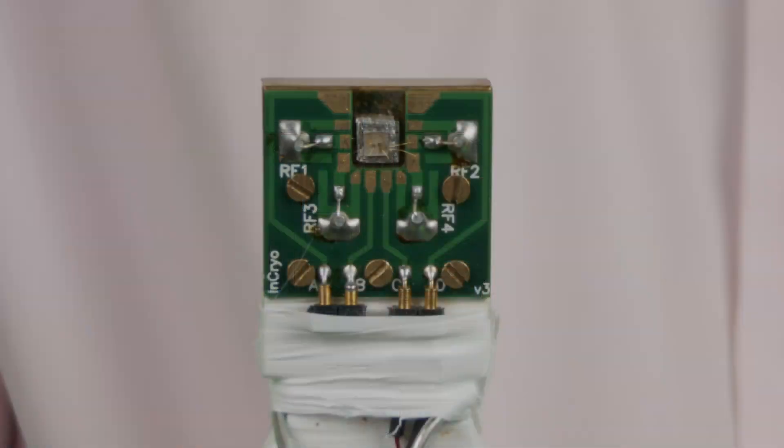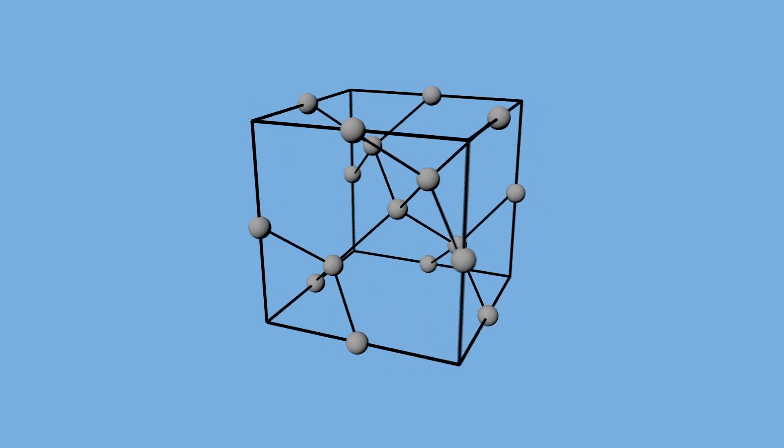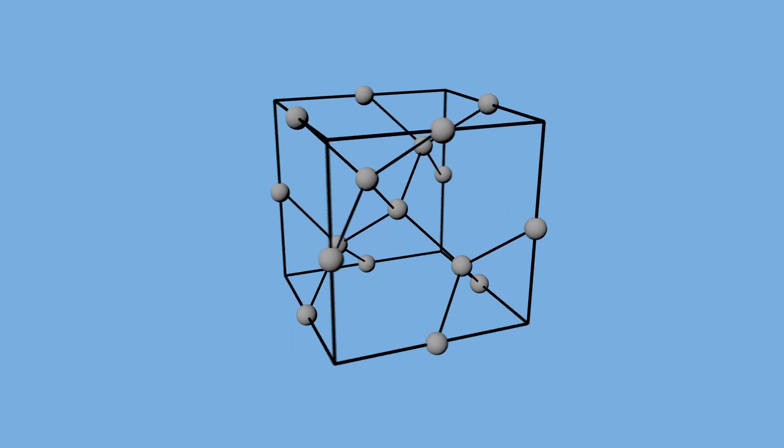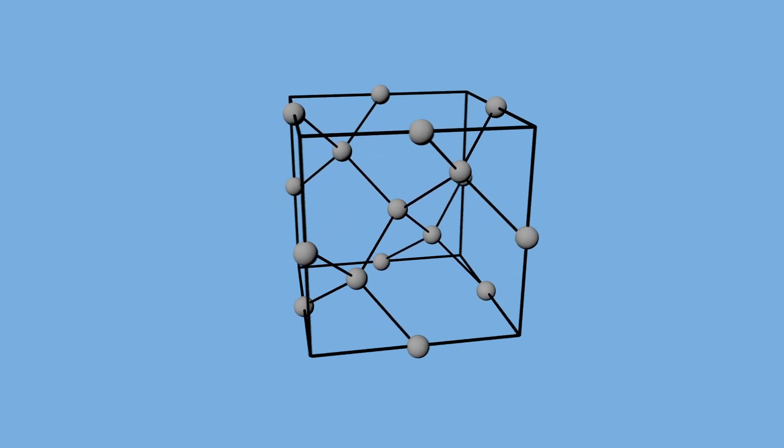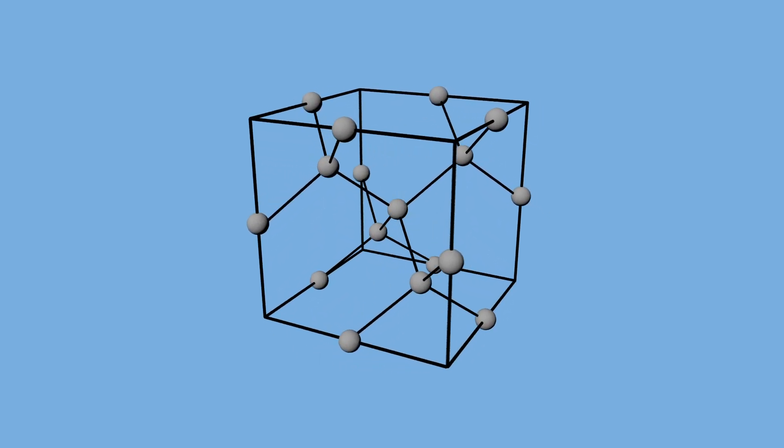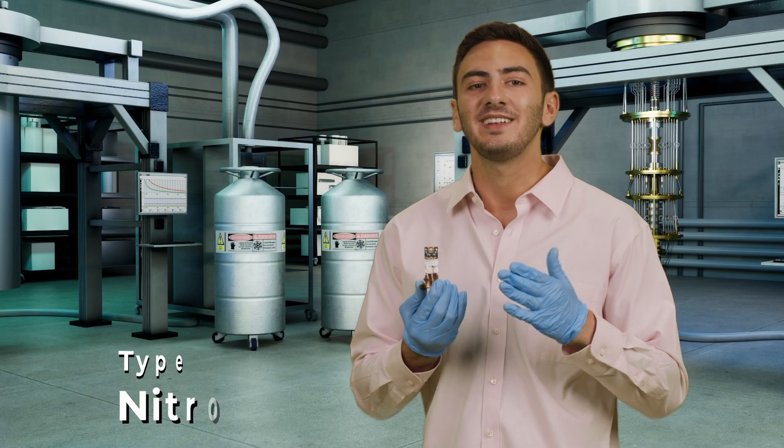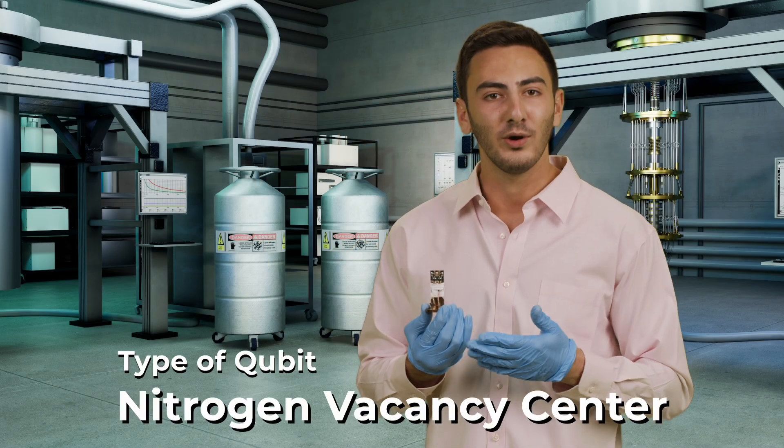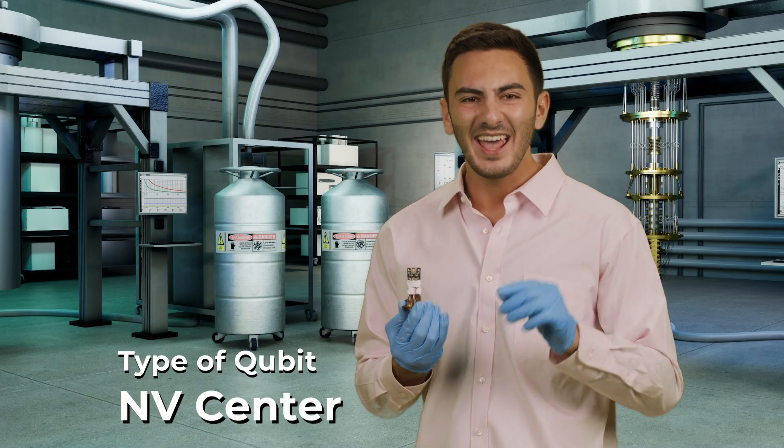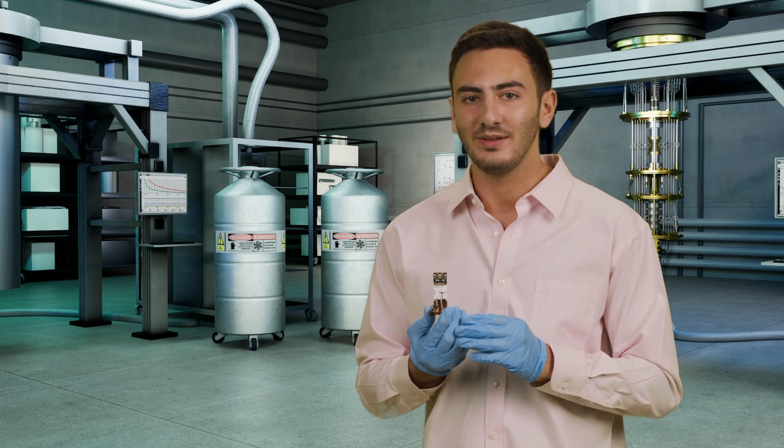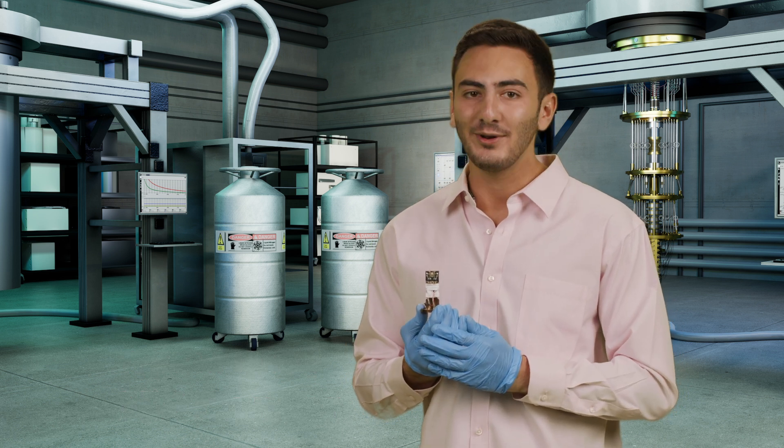This qubit here is not actually the diamond itself. It's a tiny defect inside the diamond. Diamonds are usually made entirely of carbon atoms. But when we replace one carbon atom in the crystal with a nitrogen atom, and take away an adjacent carbon atom entirely, this is called a nitrogen vacancy center, or an NV center. And this defect in the crystal is the quantum system that we're using as a qubit.